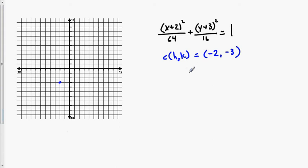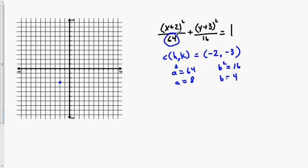Now, a squared is 64, therefore a equals 8. B squared equals 16, therefore b equals 4. Those values are squared, so to get a and b we take the square root. Since a is bigger than b, the major axis is x, which means a is going to go along the x-axis. So we go 8 units on x in each direction, and b gives us 4 units on y.